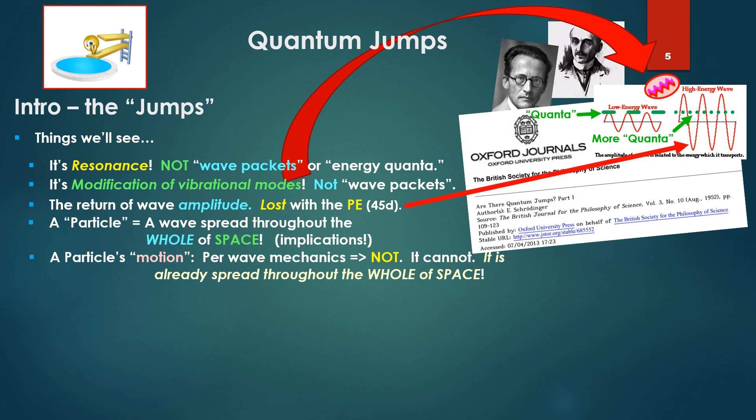A particle's motion per wave mechanics, there is none. It cannot. It has already spread through the whole of space. Collision. So what does this mean for two particles to collide?